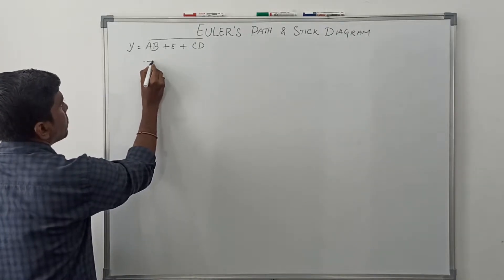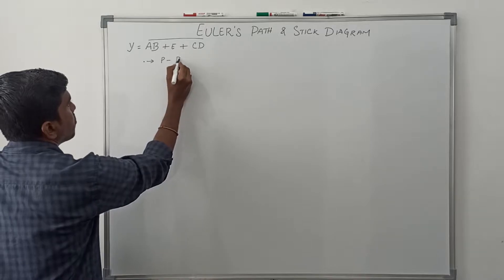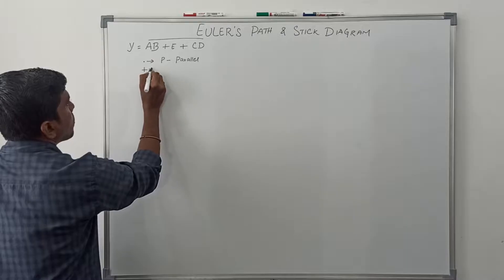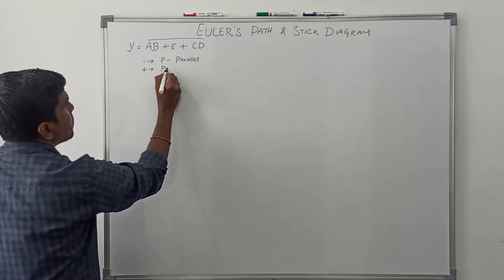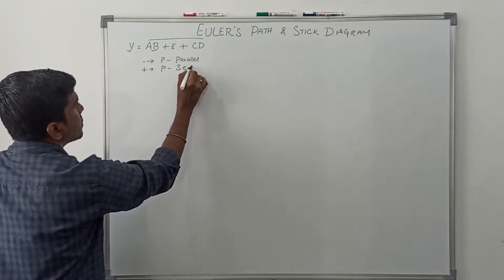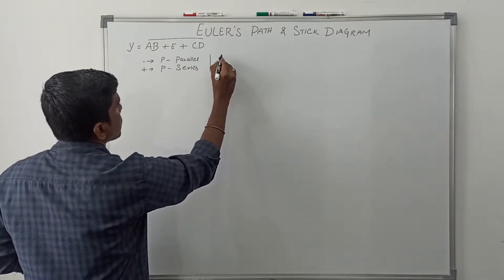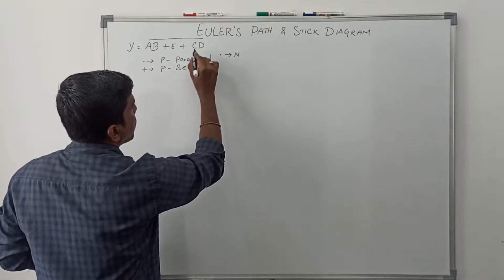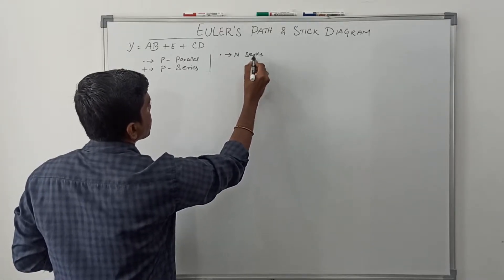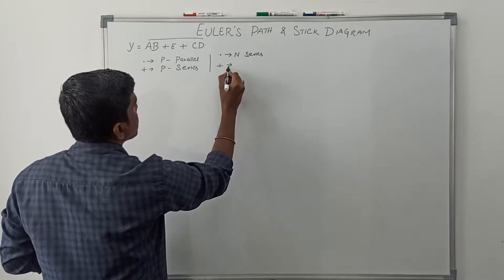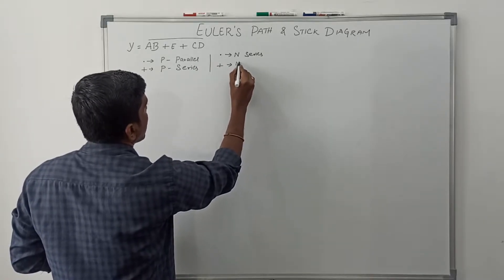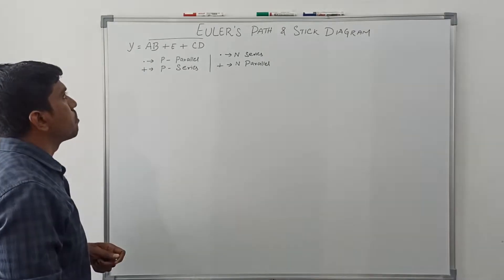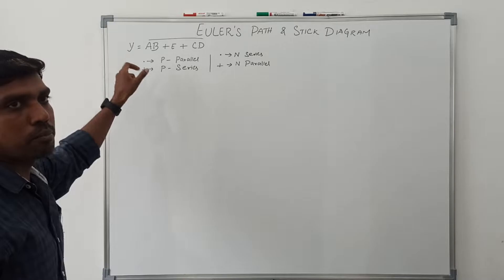Before drawing the CMOS logic design, first recall the rule: when a product is present in a Boolean expression, the PMOS transistor is connected in parallel. When the plus operator is present, the PMOS transistor is connected in series. Likewise, when a product is present for NMOS, the NMOS transistor is connected in series; when plus is present, the NMOS transistor is connected in parallel.